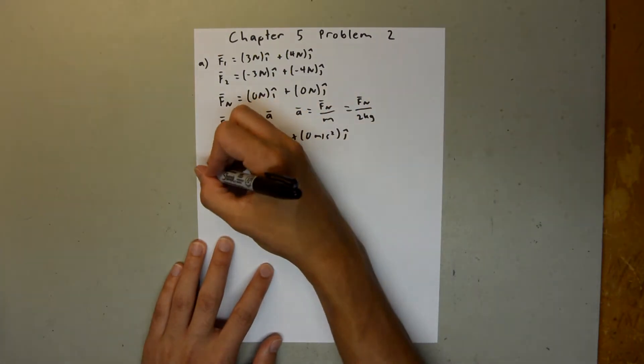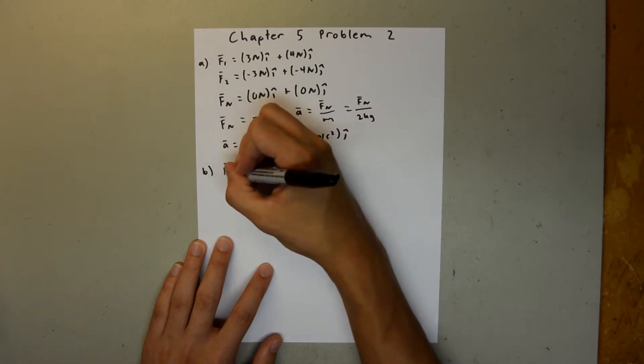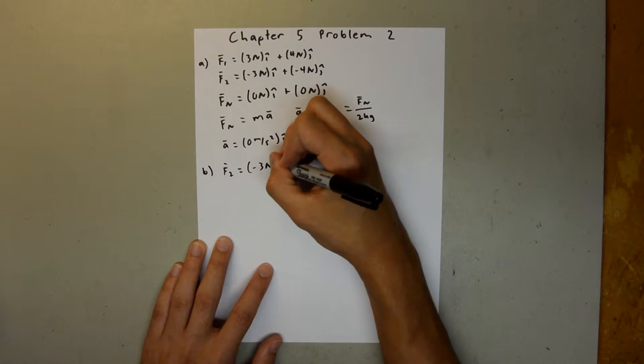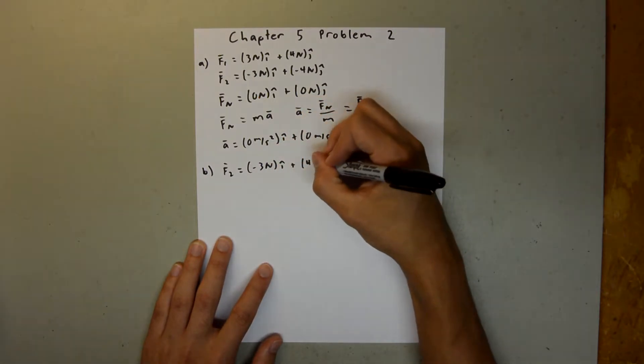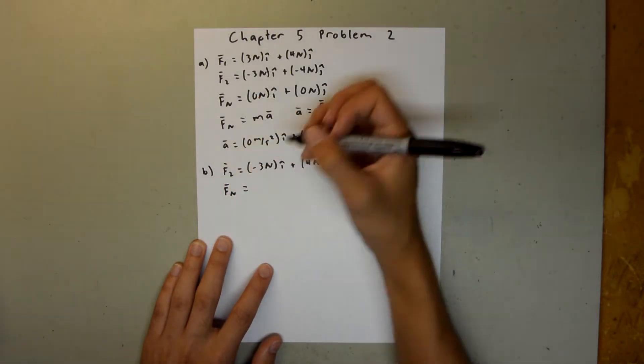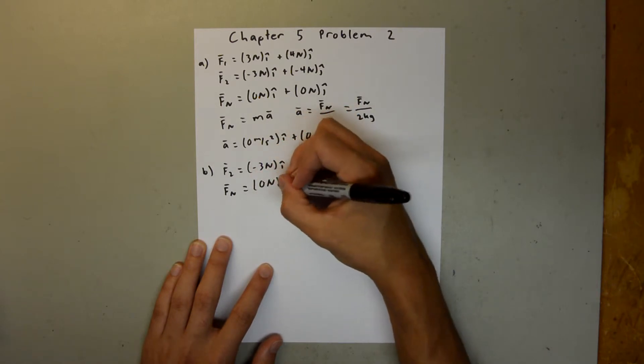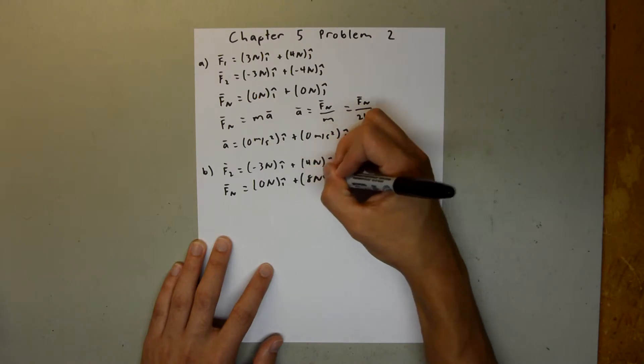And then, for Part B, we have this same force, but we have our second force, which is equal to negative 3 newtons i-hat plus 4 newtons j-hat. So, this time, our net force is equal to 3 minus 3 again, which is 0 newtons i-hat plus, and this time we have 4 plus 4, which is 8 newtons j-hat.